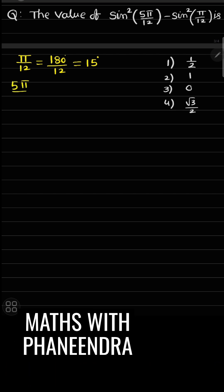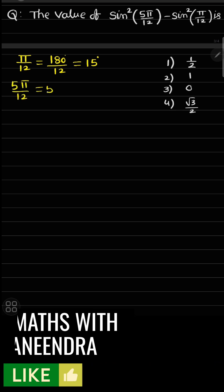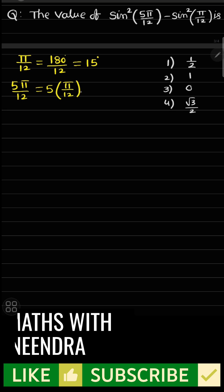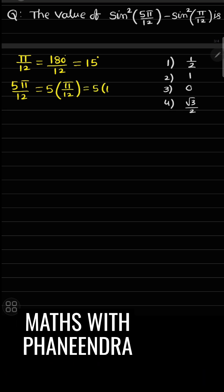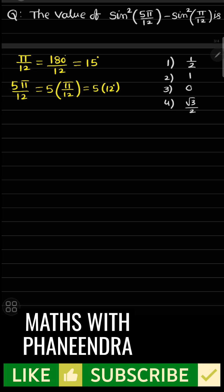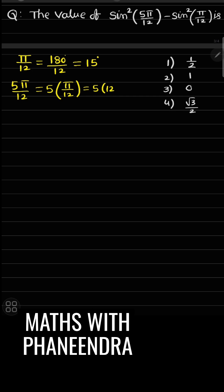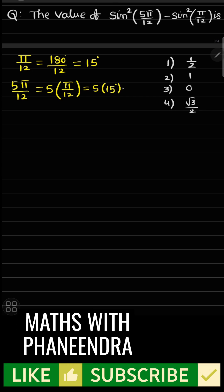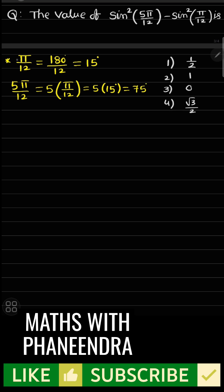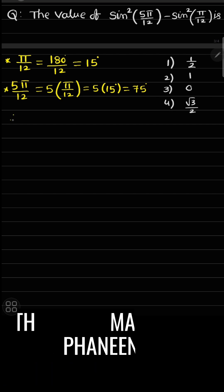So 5π/12 means 5 times π/12, which is equal to 5 times 15 degrees, which is equal to 75 degrees. Therefore, π/12 means 15 degrees, 5π/12 means 75 degrees.